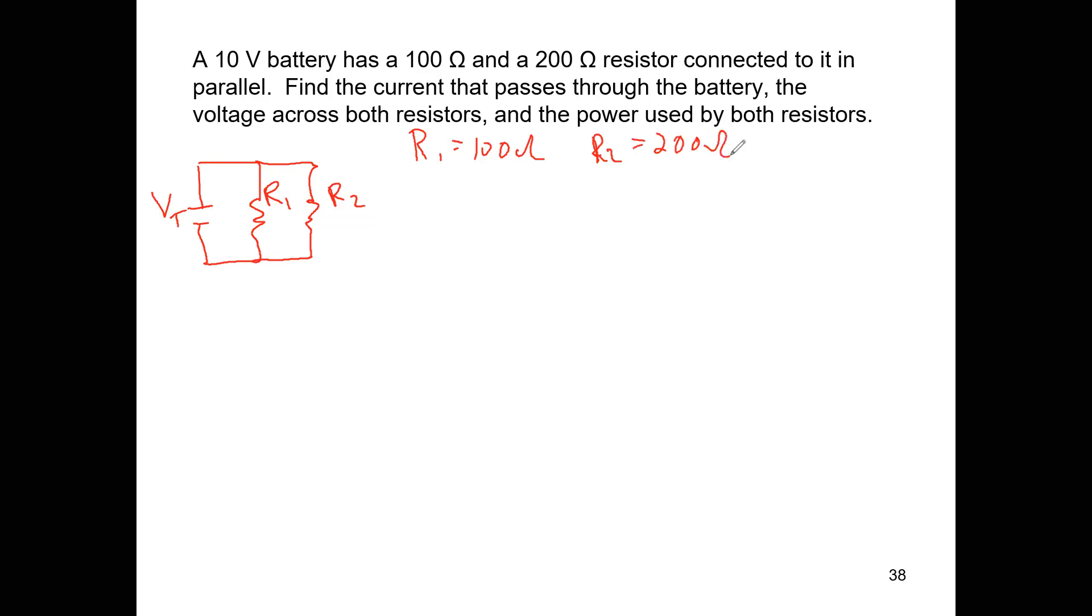We know what the resistors are. Resistor 1 is 100 ohms. Resistor 2 is 200 ohms. We know what the battery voltage is. It's 10 volts. What are we looking for here? We're trying to figure out what current passes through the battery. We're trying to figure out what the voltage across resistor 1 is and what the voltage across resistor 2 is. Well, that's no problem. We know what that is because those guys are both in parallel with each other. And the only other thing they're connected to is the battery. So they're both going to see the full voltage from the battery. That voltage is 10 volts.